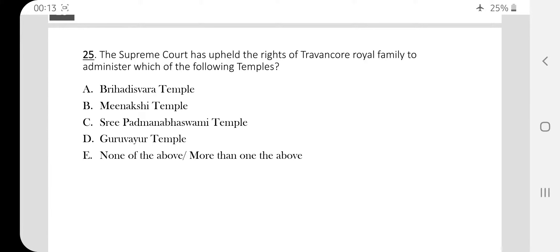Question number twenty five. The Supreme Court has upheld the rights of Travancore royal family to administer which of the following temples? The Supreme Court has given order to the Travancore royal family to administer this temple. This temple is Shri Padmanabhaswamy Temple.